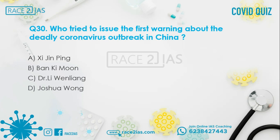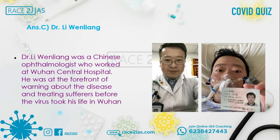Question number 30: Who first tried to issue the warning about the deadly coronavirus outbreak in China? Option A: Xi Jinping. Option B: Ban Ki-moon. Option C: Dr. Li Wenliang. Option D: Joshua Wong. The right answer is Option C, Dr. Li Wenliang. He was a Chinese ophthalmologist who worked at Wuhan Central Hospital. He was at the forefront of warning about the disease and treating sufferers before the virus took his life in Wuhan.